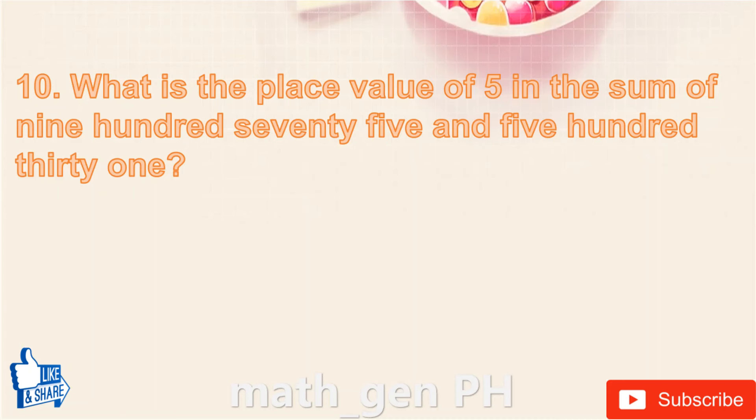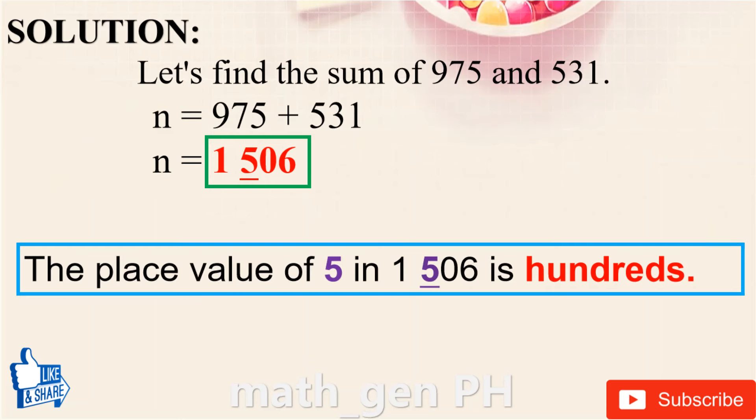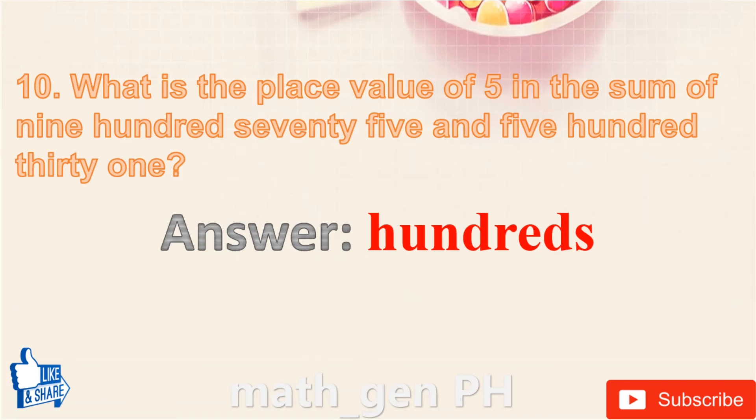Solution: Find the sum of 975 and 531. 975 + 531 = 1,506. The place value of 5 in 1,506 is hundreds. Answer: hundreds.